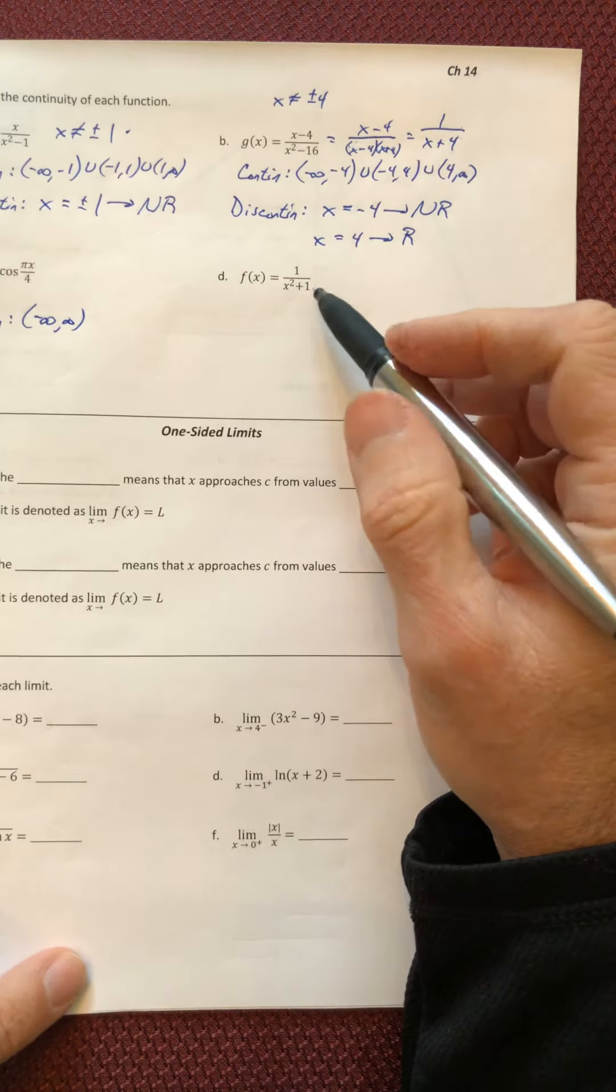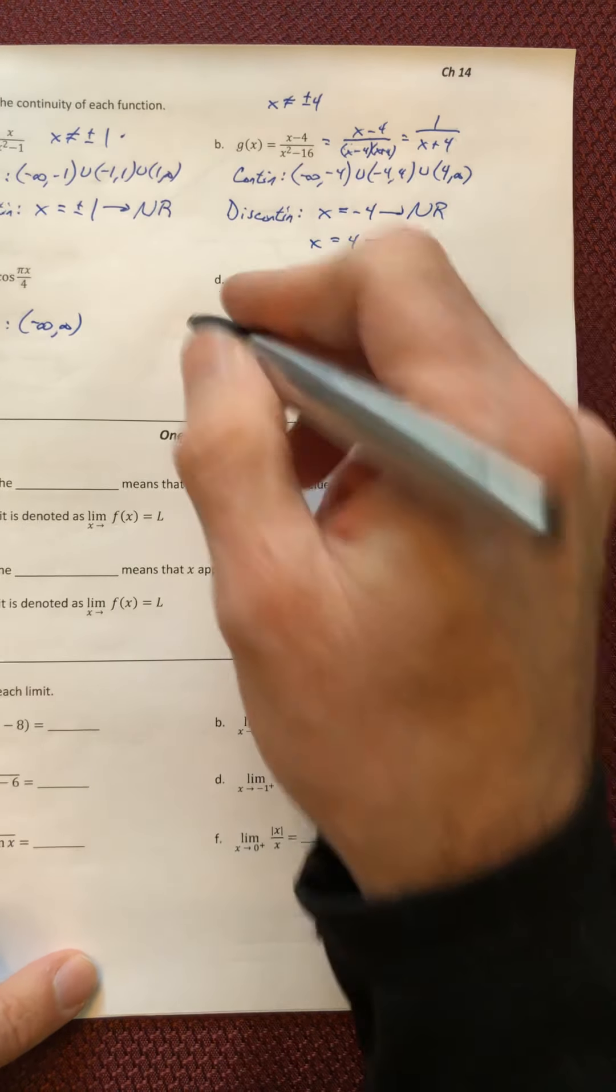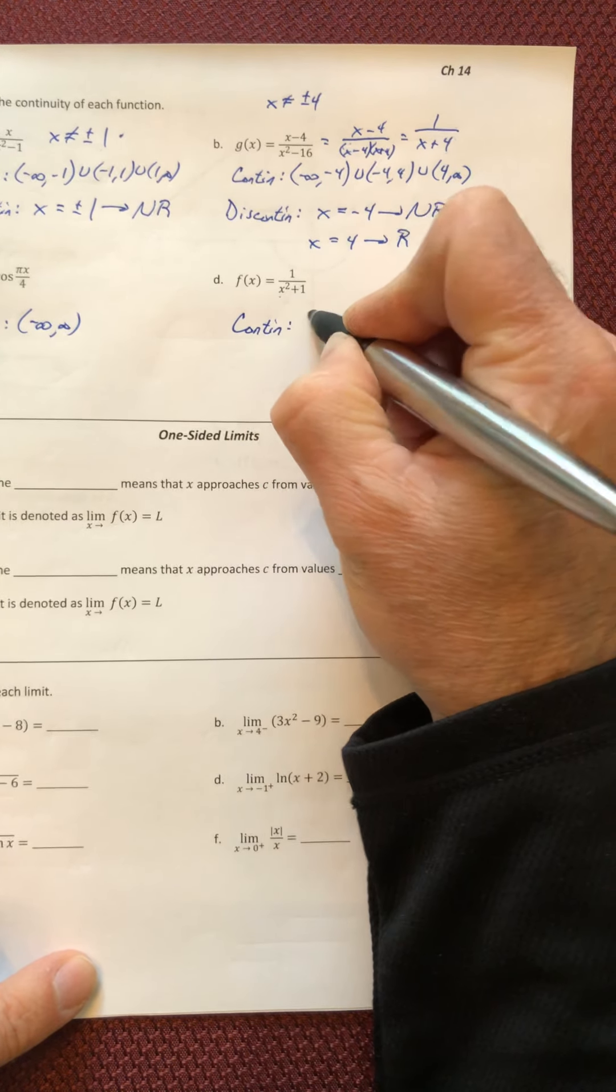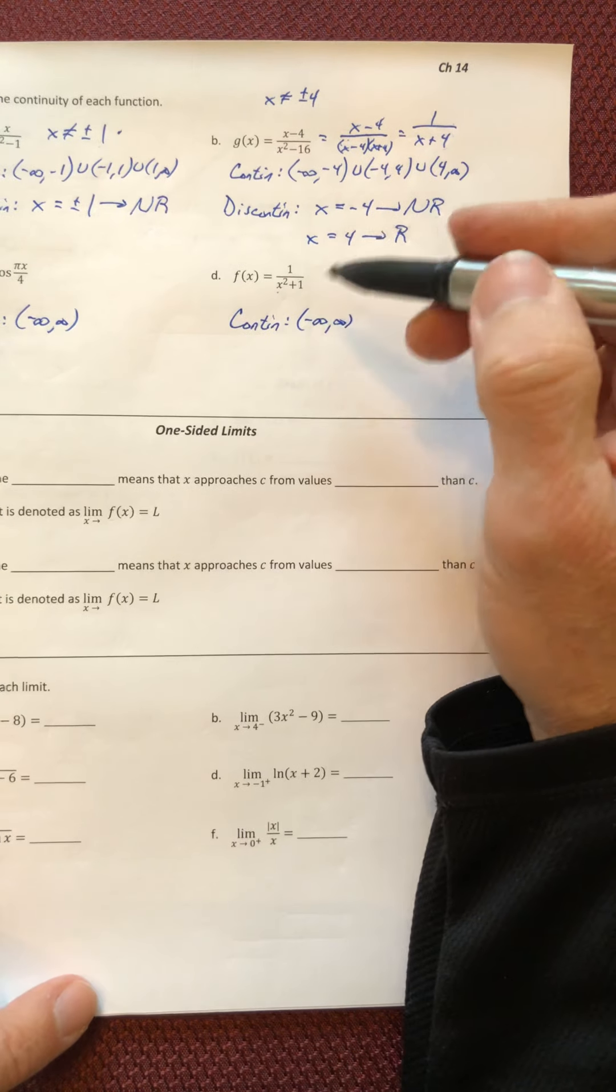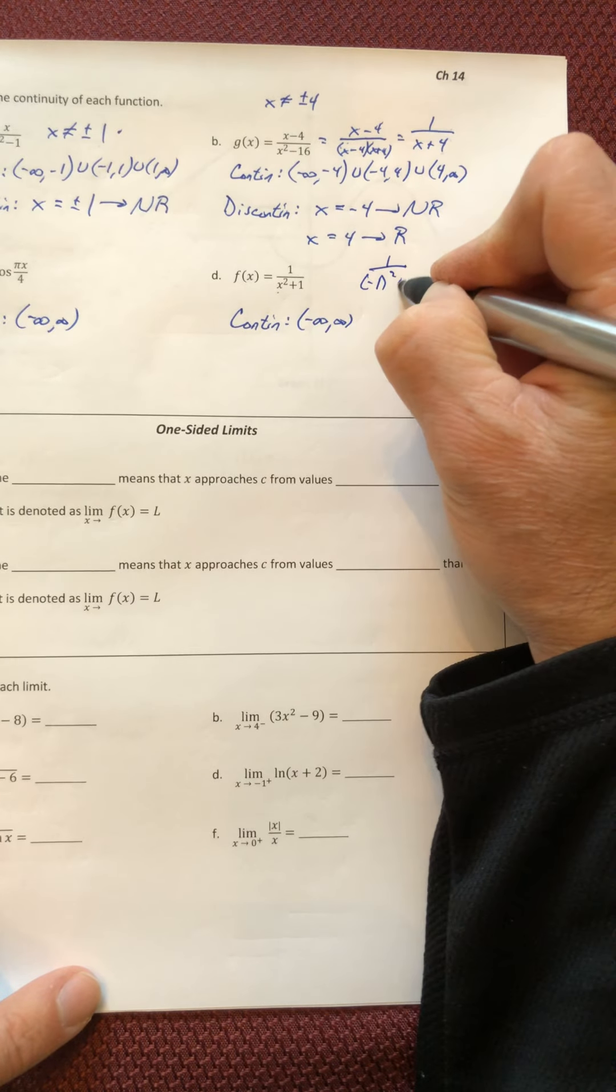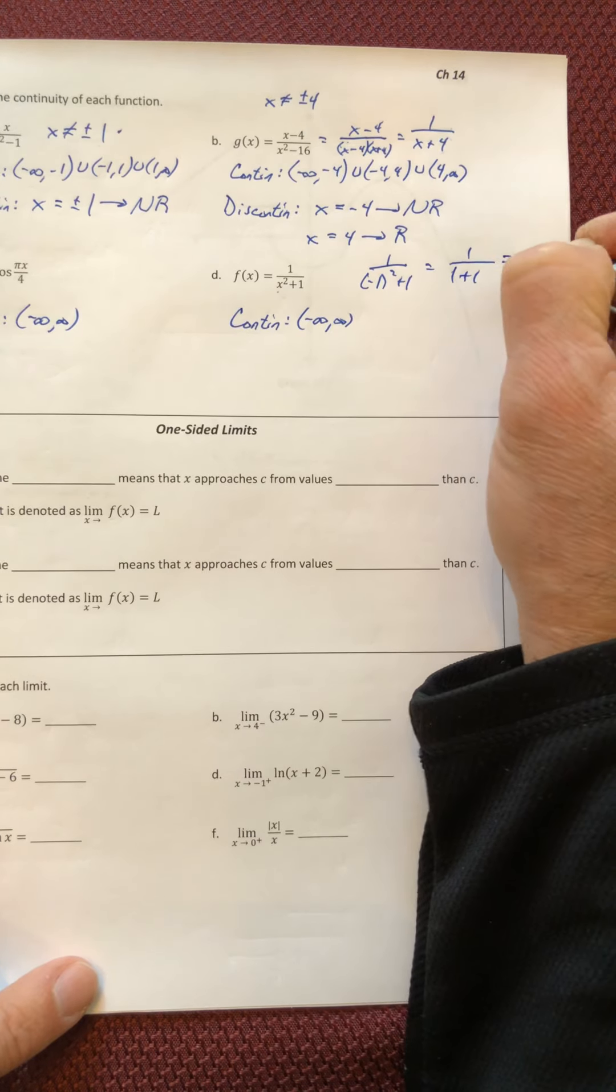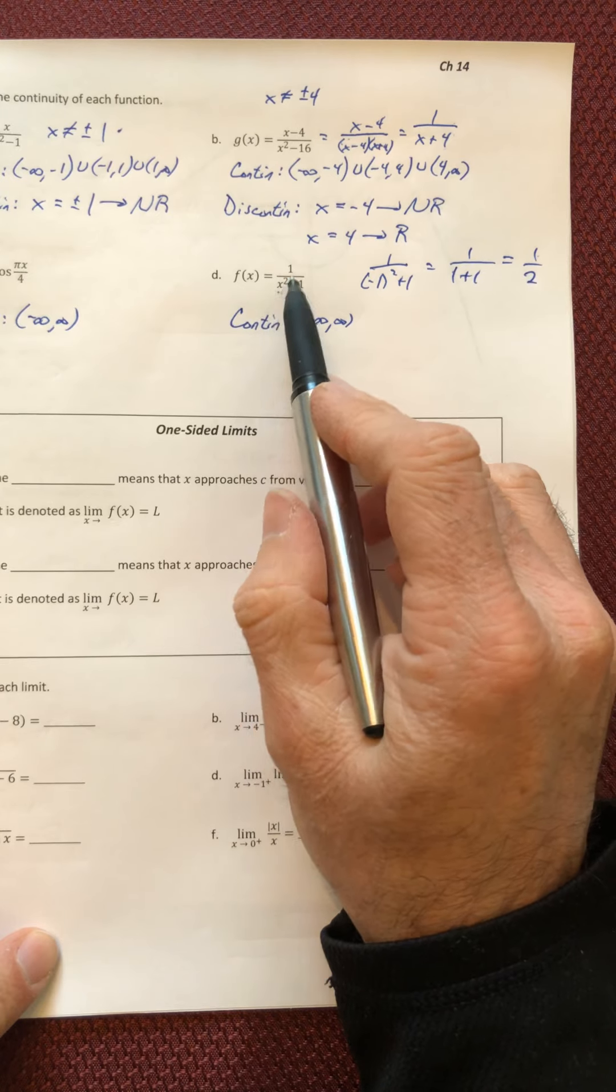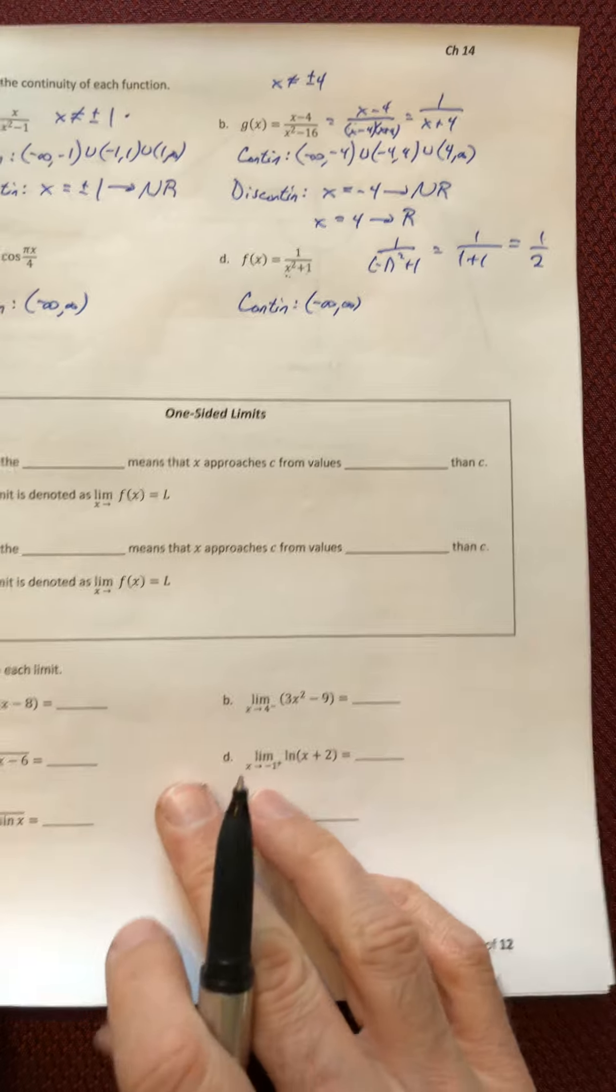And on D, you have x squared plus one in the denominator, so that denominator is never going to equal zero. So it's continuous everywhere else. Now some of you might be going, well, what about negative one? Well, if you square negative one, you normally get one, and one plus one is not zero, it's two. So you can plug any number you want, because if you square it, it's always a positive. And a positive plus one never is equal to zero.